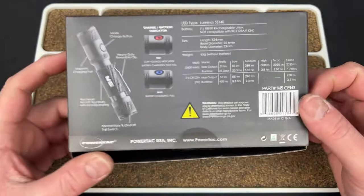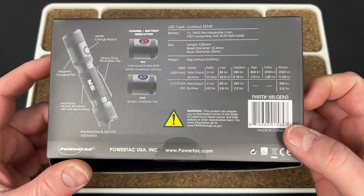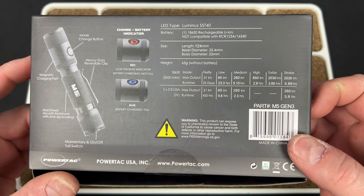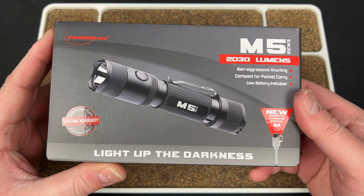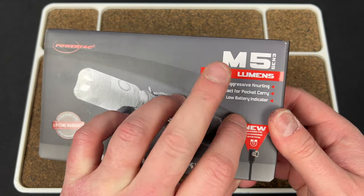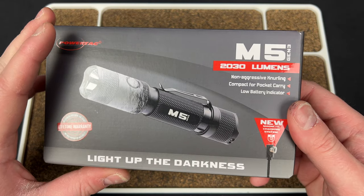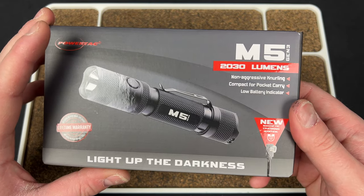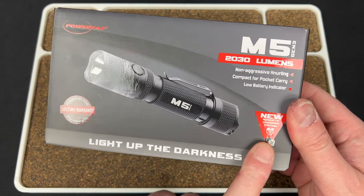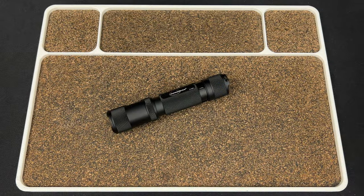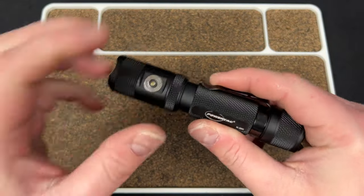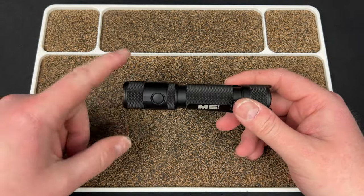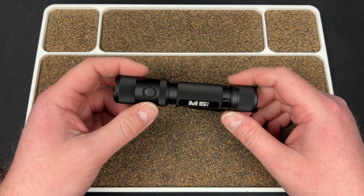I don't think it's super expensive or anything you can see made in China, but here's the information if you want it. Bada bing, bada boom. Did I say 2300? It's 2030. Non-aggressive knurling. Compact for pocket carry. Low battery indicator. And it does charge like that, which is really cool. So, I'll show you that in a second. Right here, you pop that little guy on, and it charges the other end of it, I believe, is a USB-A. Yeah.